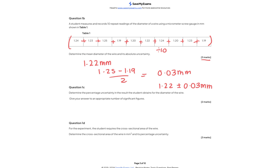Question 1c: determine the percentage uncertainty. Take our absolute uncertainty 0.03, divide it by the mean 1.22, then multiply by 100 because it's a percentage. We get 2.46%, so we can write the mean as 1.22 ± 2.46%.